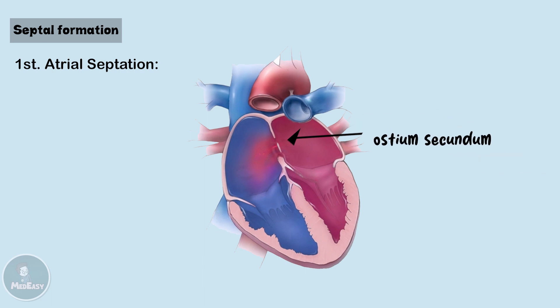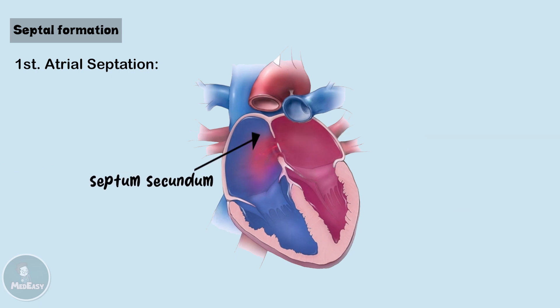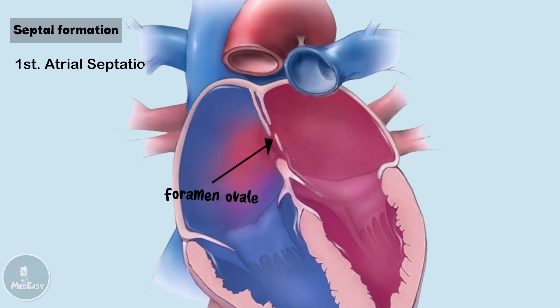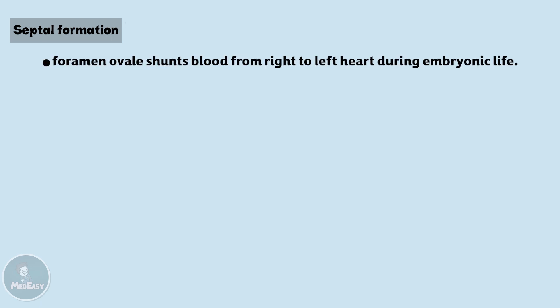On the right of septum primum, a second septum begins to form called the septum secundum, which will expand and cover most of the ostium secundum. The residual opening between those two septa is called the foramen ovale. Foramen is Latin for hole, and the foramen ovale serves to shunt blood from the right heart to the left heart during embryonic life.